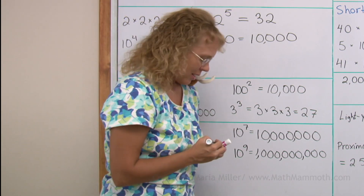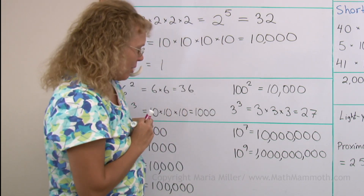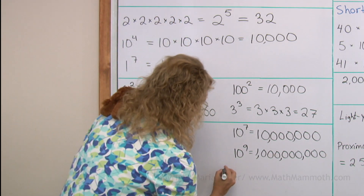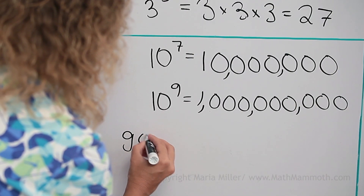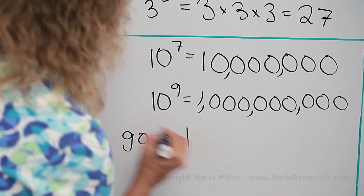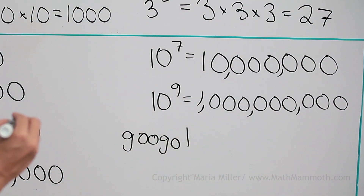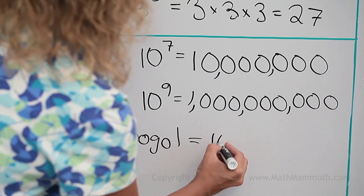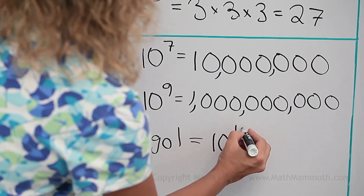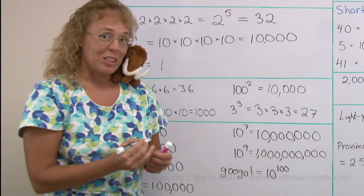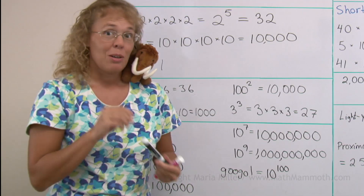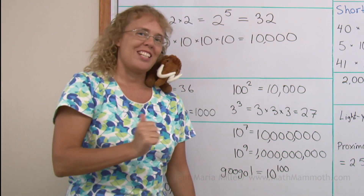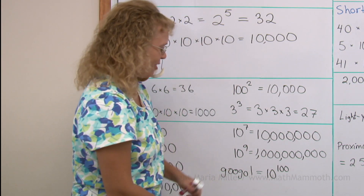Mathi is reminding me of one more power of 10. You know about Google, spelled G-O-O-G-O-L? Googol is 10 to the hundredth power, which is 1 followed by 100 zeros — but I'm not going to write it here, it would take a long time.